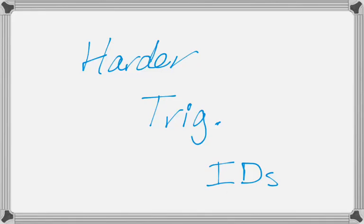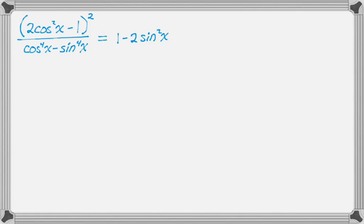In this video we're going to try to verify some slightly harder trig identities. We have the quantity 2 cosine squared minus 1, squared, over cosine to the 4th minus sine to the 4th, and that's going to equal 1 minus 2 sine squared of x.